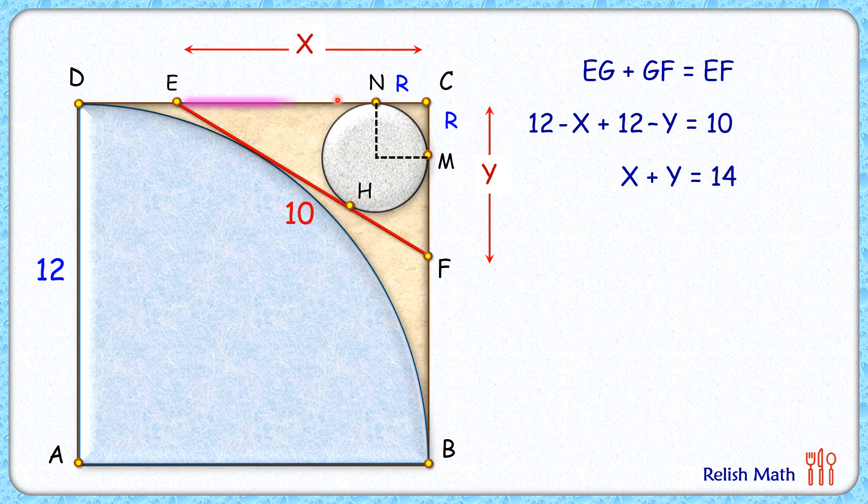How about length EN? EN is the full length x minus r. Now from external point E two tangents are drawn, EN and EH. By theorem they will be equal and thus this length will be x minus r.